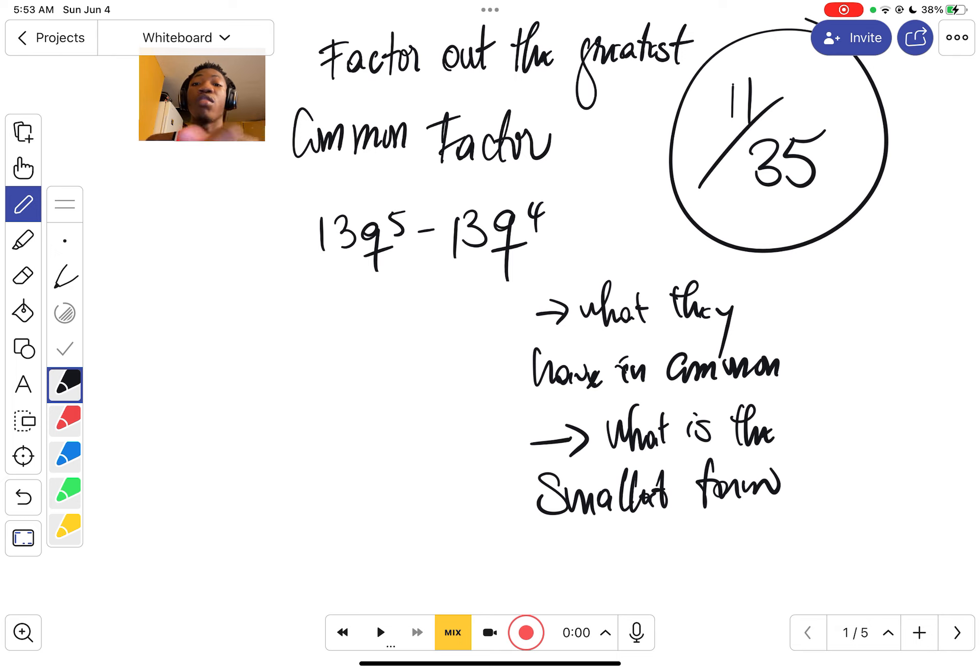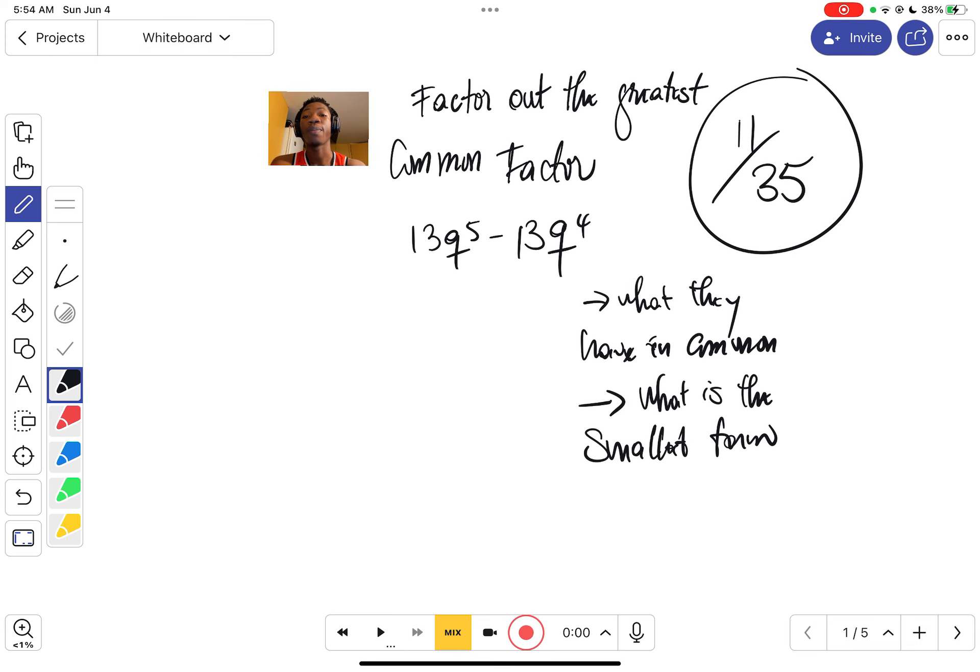For example, in this exercise, what are the things that they have in common? They have the number in common and they also have the letter in common. We're going to start by the numbers, which is 13, so we're going to write 13 down. What else do they have in common? They have the q in common.